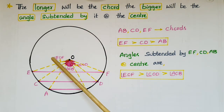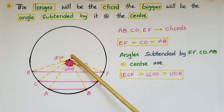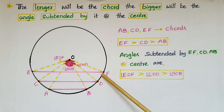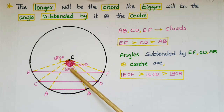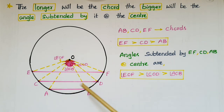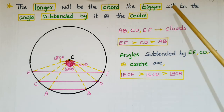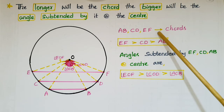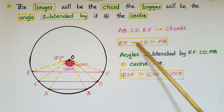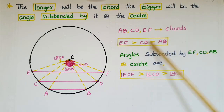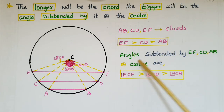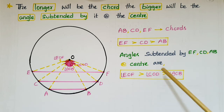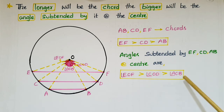If you observe, angle EOF is the greatest angle out of these three because EF is the longest chord, and angle AOB is the smallest angle because AB is the smallest chord. So we can say that the longer the chord, the bigger the angle subtended by it at the center. The lengths satisfy EF > CD > AB, and correspondingly, angle EOF > angle COD > angle AOB.